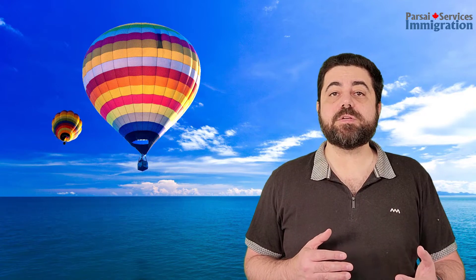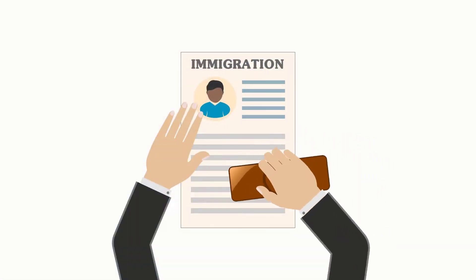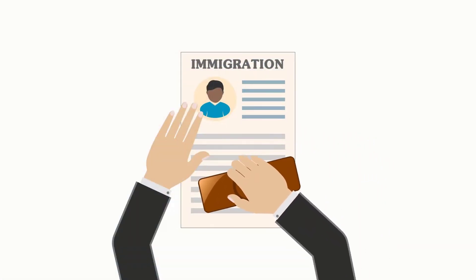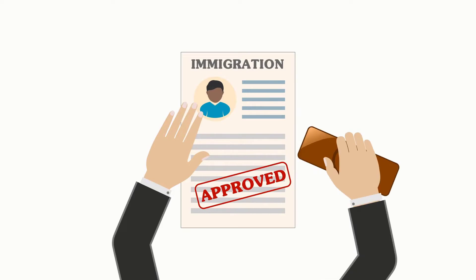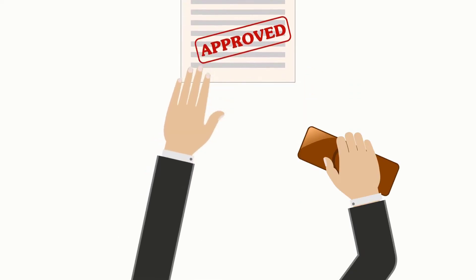You submit the application through a visa application center to a visa office close to your home and then wait. The officer reviews your application, and if they are convinced that you meet the residency requirements and you are not inadmissible to Canada, they issue you a PR travel document.